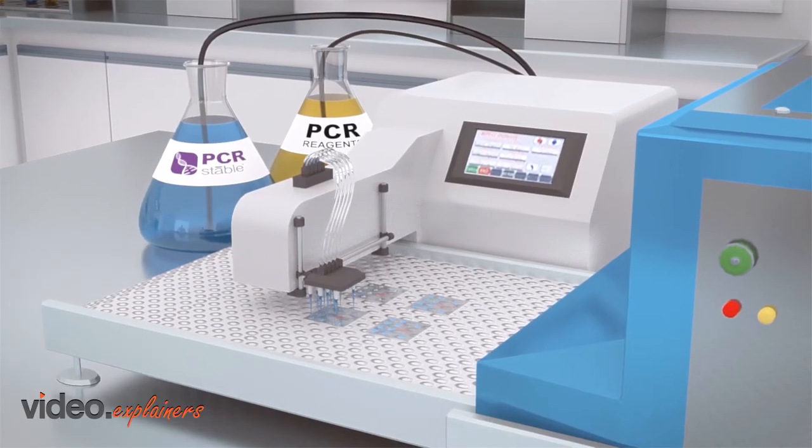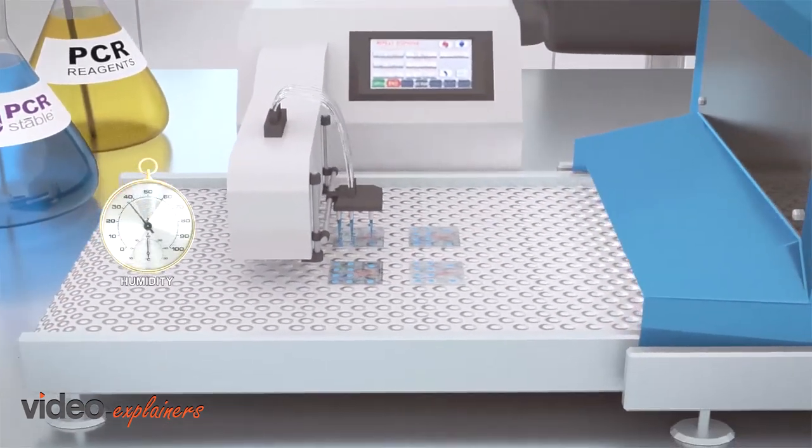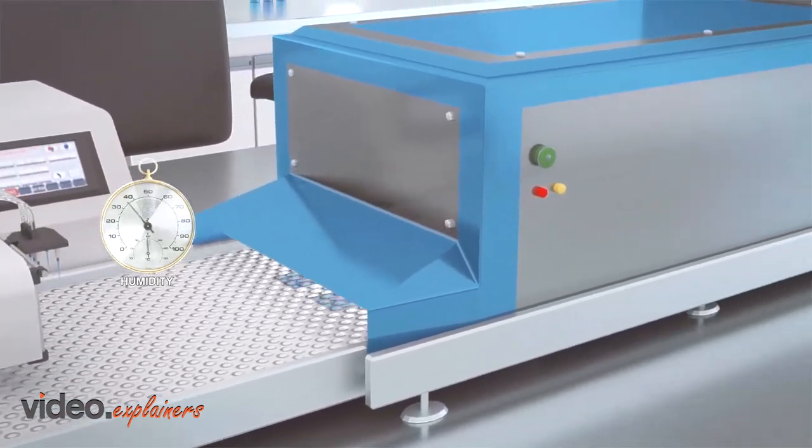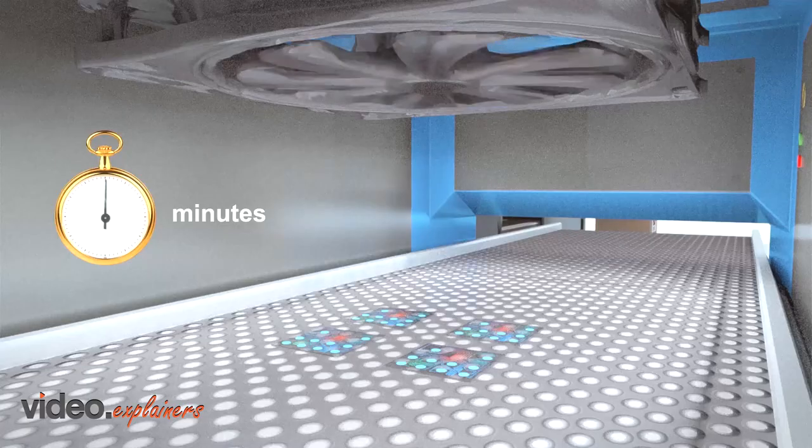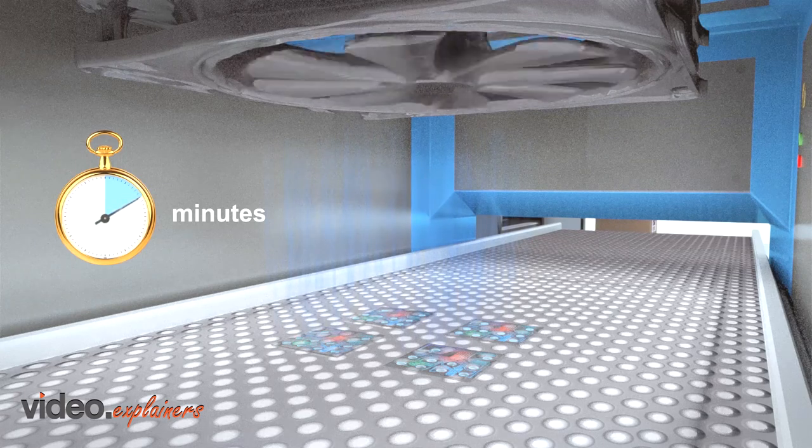PCR Stable is compatible with automated dispensing and does not require rigid humidity control. A drying tunnel can be used for continuous production of dry assays. Trays loaded with chips containing microliters of assay reagents will dry in minutes.